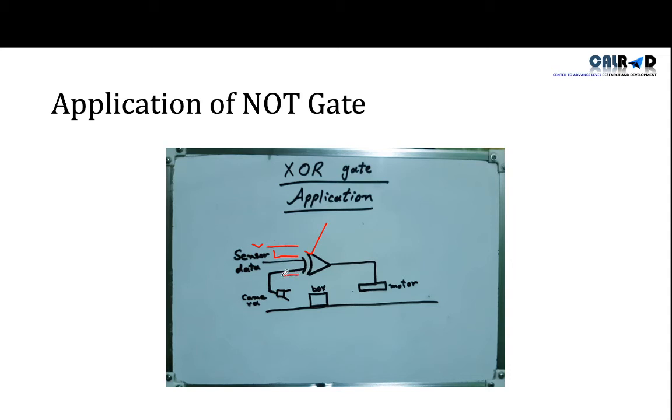And another input will be this camera, live camera or sensor. So this is the moving platform and this box is coming from this side. When this box will reach here, this sensor will check the color of the box. If the box is of yellow color, then it will send one value here.